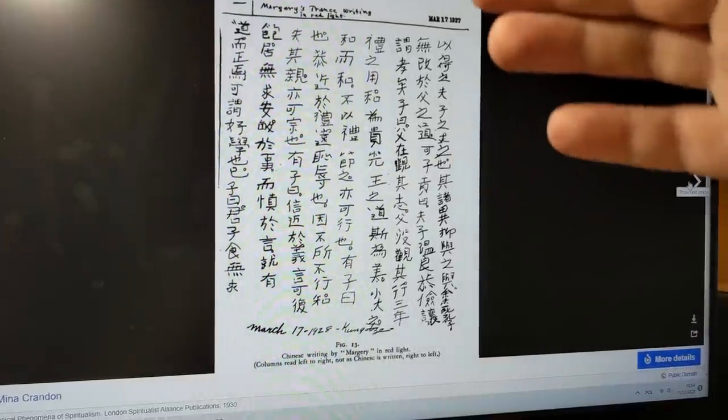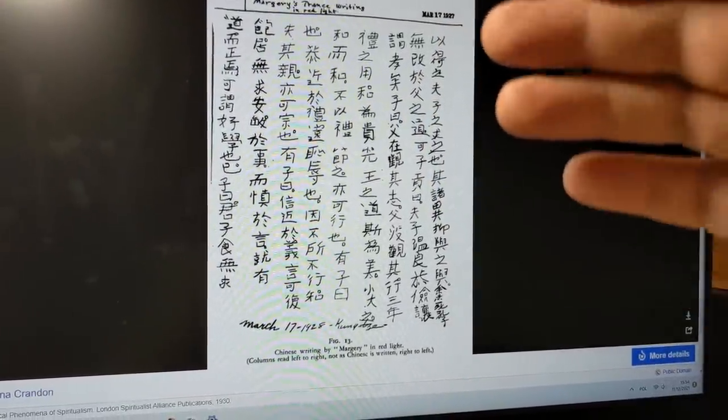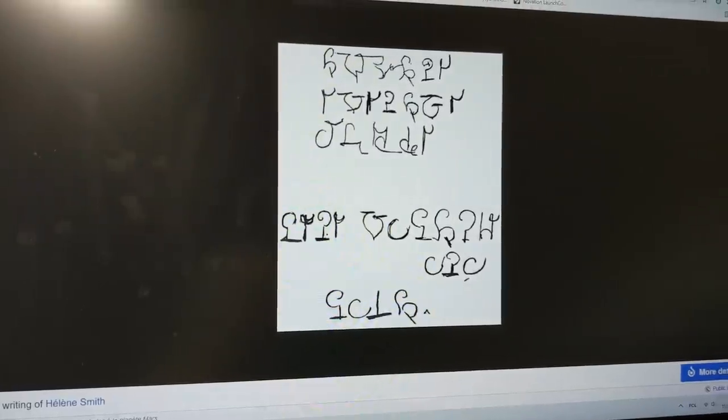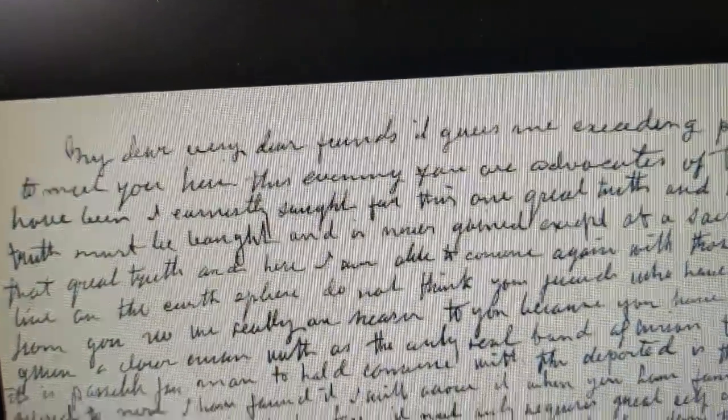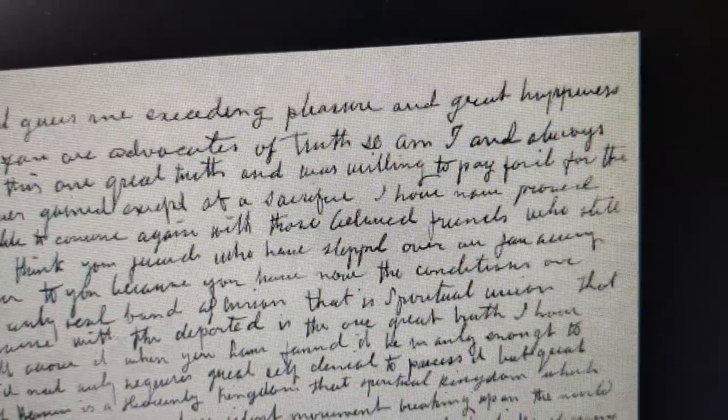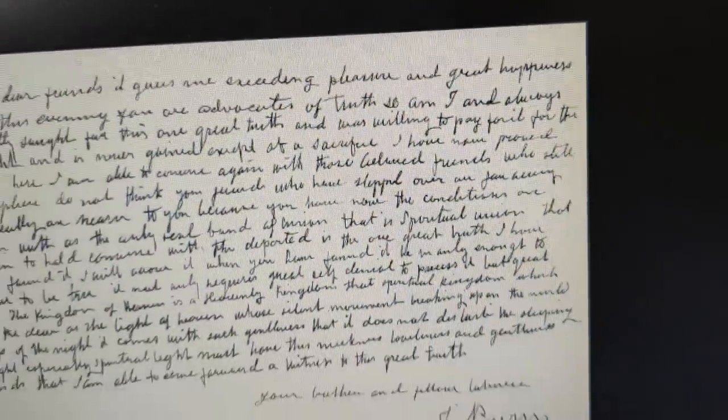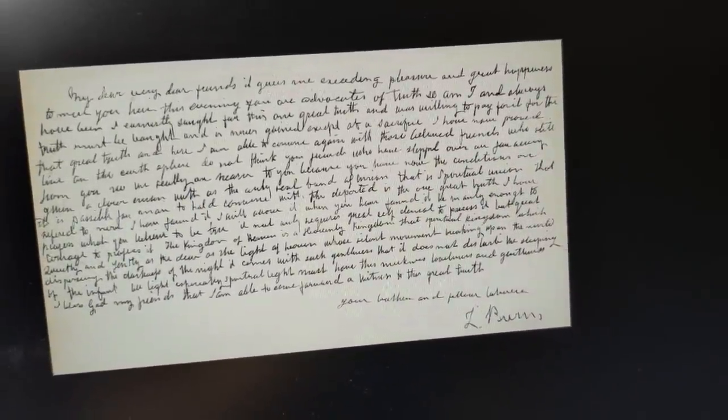And over here on the screen I've got some Chinese automatic writing. That seems very deliberate to me, very intentional. Now if we move over to, for example, this one, you can see that all of these words are perfectly formed, perfectly understandable. This isn't at all what my own automatic writing ends up looking like.